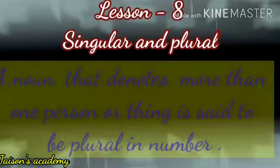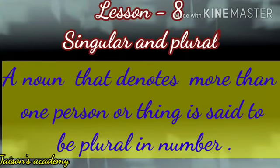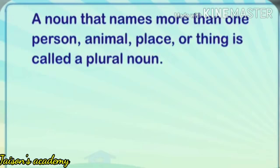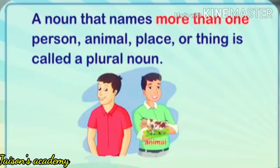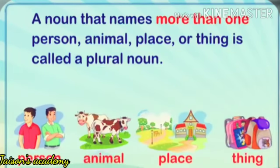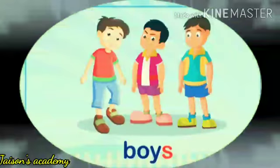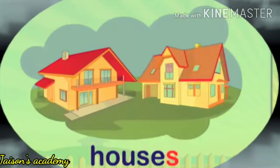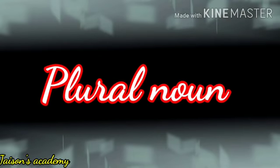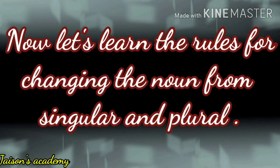What is a plural noun? A noun that denotes more than one person or thing is said to be plural in number. A noun that denotes more than one person, animal, or thing is called a plural noun. For example: boys, cats, houses, and flowers — these are plural nouns.